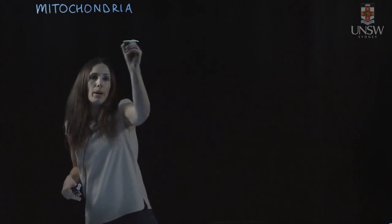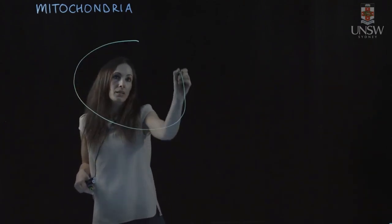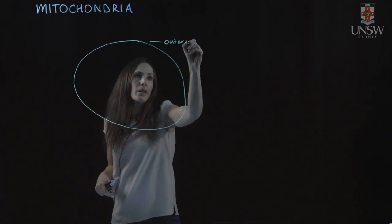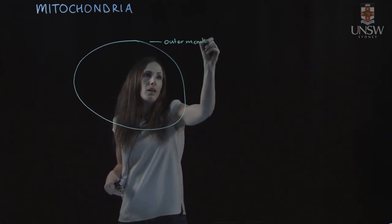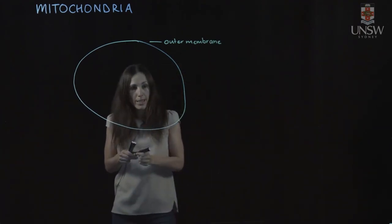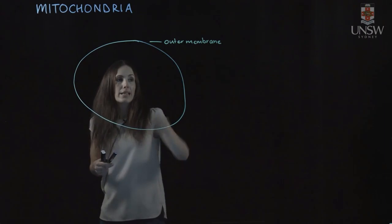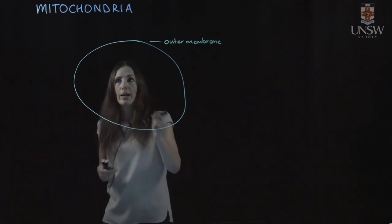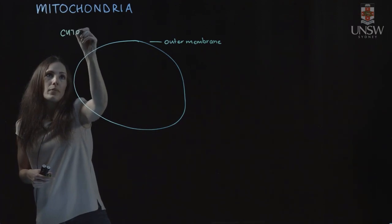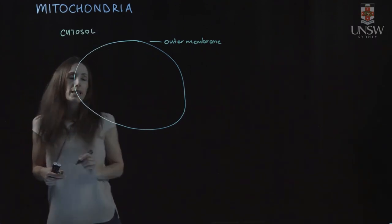and they have an outer membrane. So here's their outer membrane. The outer membrane lets most things across so that the outside of the mitochondria is similar in ion concentration to just inside the outer membrane.